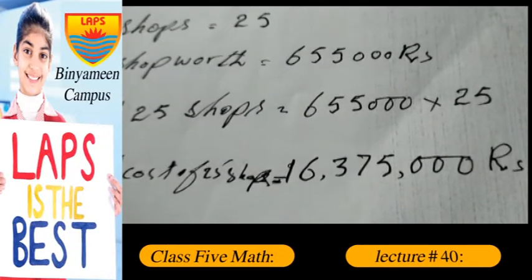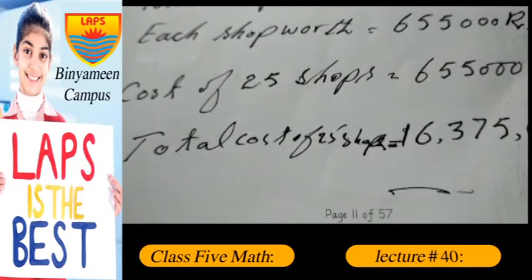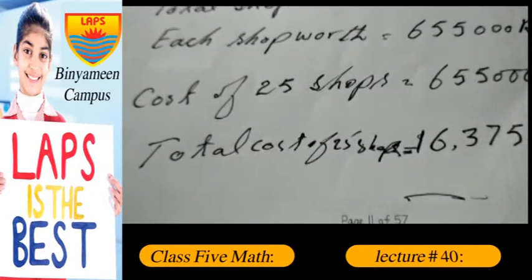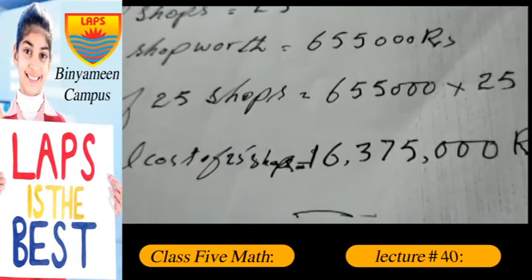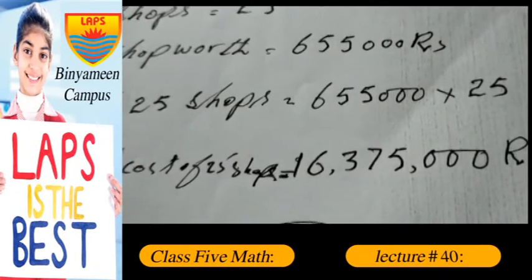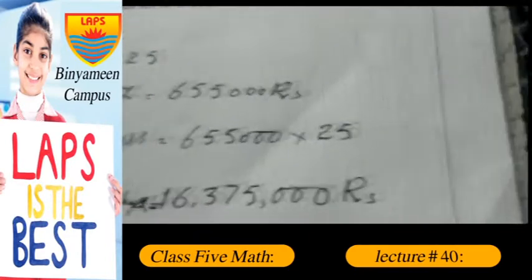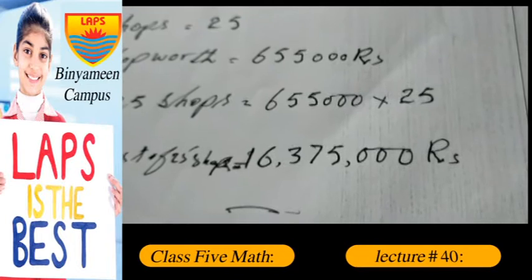lakhs and 55 thousand multiplied by 25. Total cost of 25 shops = 16,375,000 rupees.